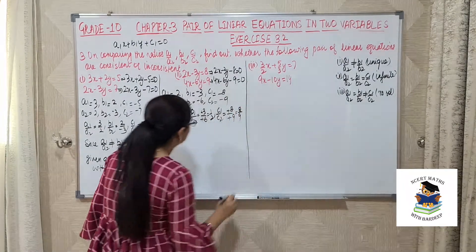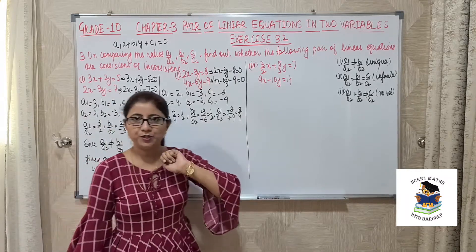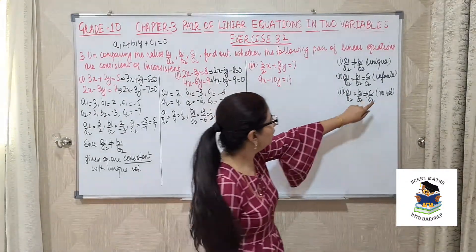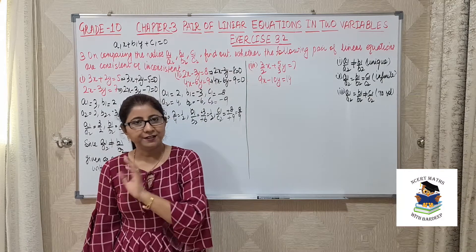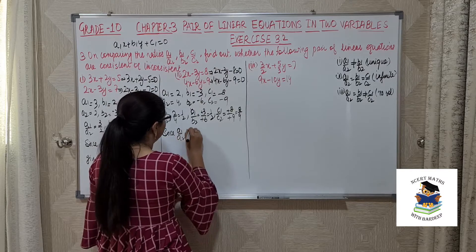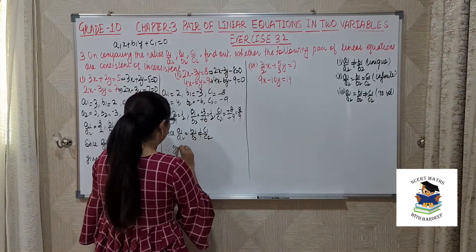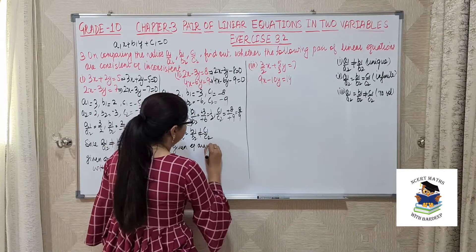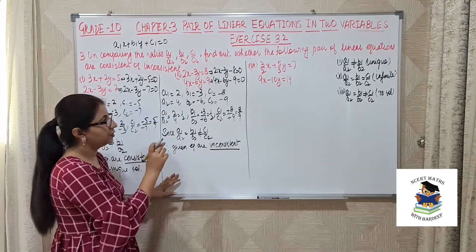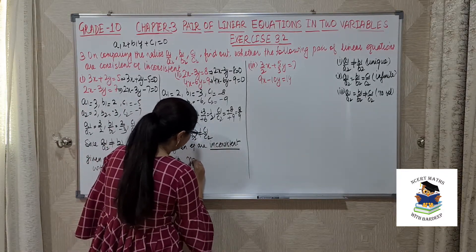Now we check: a1/a2 equals b1/b2 — both are 1/2 — but it is not equal to c1/c2. So the first two ratios are equal but the third is not. This means no solution. No solution means the equations are inconsistent. Since a1/a2 = b1/b2 but not equal to c1/c2, therefore the given equations are inconsistent with no solution.